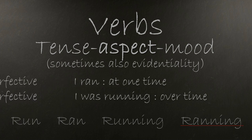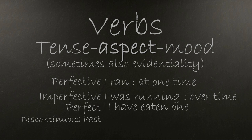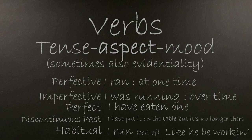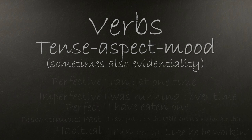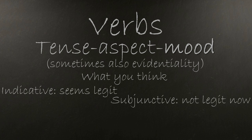There are lots of aspects other than just perfective and imperfective. First I should bring up the perfect — which, thanks to linguists just being the best at naming things, has basically nothing to do with the perfective. The perfect is a sort of mixture of tense and aspect where you say you have done something. Another interesting one is the discontinuous perfect, which is like the perfect but for when the thing you did is no longer the case — for example, if I have put it on the table but it's no longer there. There's also the habitual, which does exist in English to an extent: 'I run' would generally be taken to mean I run habitually. Mood is the use of inflection to indicate a speaker's attitude. The most basic is the indicative for stating things you consider to be the truth. The subjunctive mood expresses things not currently the case — like wishes, emotions, possibilities, judgments, opinions, obligations, or future actions.